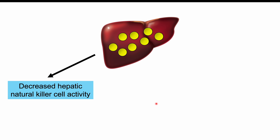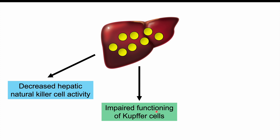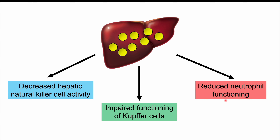Before discussing the research, it is important to note that the liver contains many important immune cells, including natural killer cells, Kupffer cells, and neutrophils. The problem in non-alcoholic fatty liver disease is that it is known to affect these immune cells and their functioning. Fatty infiltration in the liver can lead to reduced hepatic natural killer cell activity, impaired functioning of Kupffer cells — which help other immune cells combat bacterial and other infections — and also reduces the functioning of neutrophils that reside in the liver.